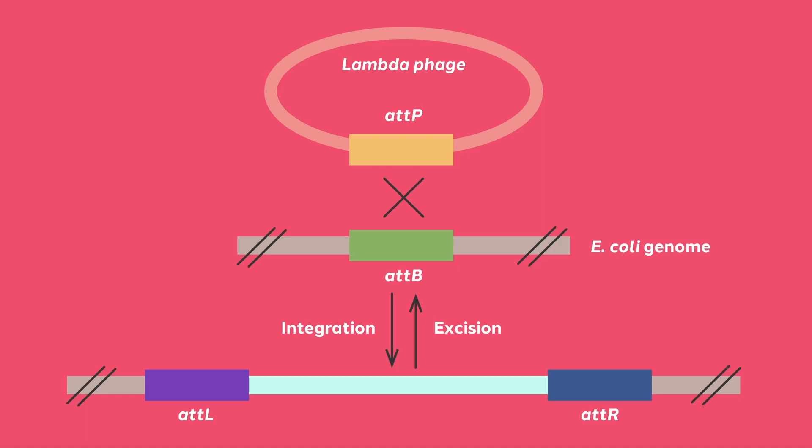After insertion, the recombination sequences are now called atL and atR. If the Phage senses that the bacteria is under stress, it will excise itself. Upon excision, atL and atR are converted back to atP and atB, and the Phage DNA is removed from the bacterial chromosome. The Phage then begins its lytic growth cycle.